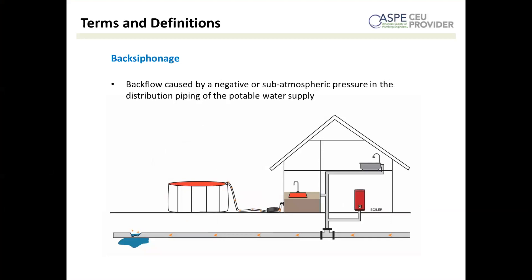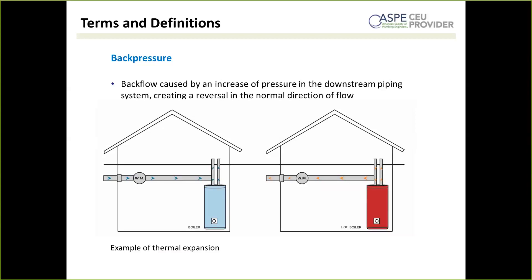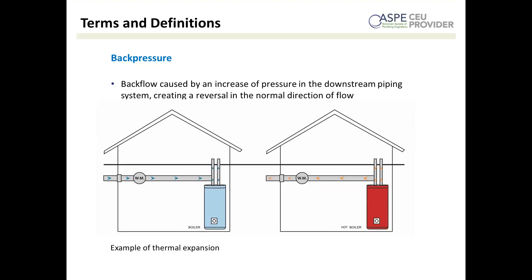You can think of back siphonage as a pull from the supply side, which leads to our next term: back pressure. Back pressure is a push from the downstream side. A back pressure condition occurs when there's an elevated pressure between the potable and the non-potable source. This can be caused by pumps that increase pressures above city water supply pressure, forcing non-potable water in the opposite direction. Also, boilers or other equipment with heat cause thermal expansion, resulting in pressures that can exceed incoming water pressure and force non-potable water into your potable piping system.